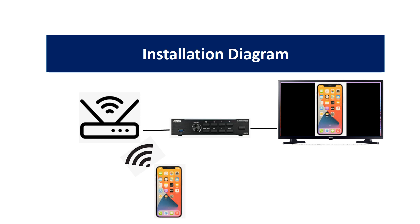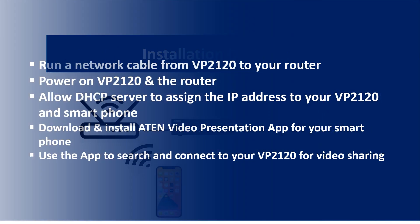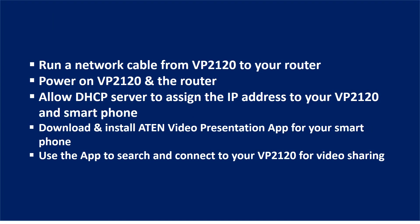The installation diagram contains a router, VP2120, a smartphone, and a TV. Run a network cable from VP2120 to your router. Power on VP2120 and the router.